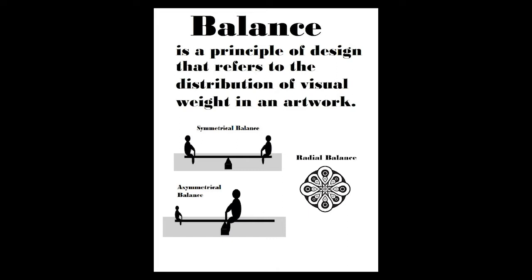With asymmetrical balance, you take that big subject — the heavy subject — and you can move it closer to that center point and it'll balance it out. Or you can take lots of little subjects and put them on the opposite side of the big one and it'll balance it out as well. The last kind of balance is radial balance, and that's when everything radiates from a central point. If it's right there in the center of the artwork, it's also considered symmetrical.